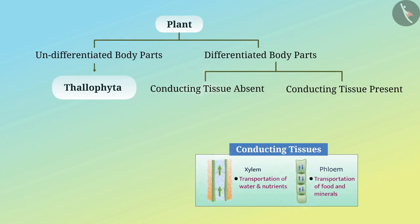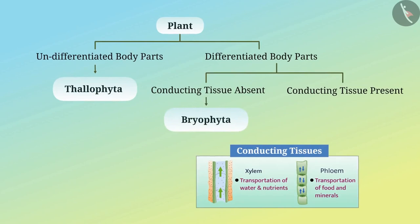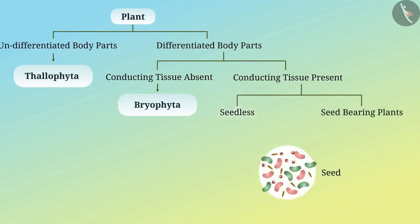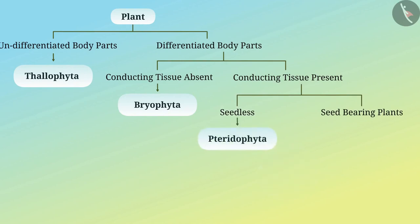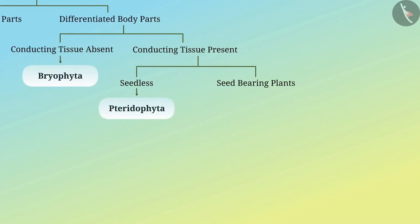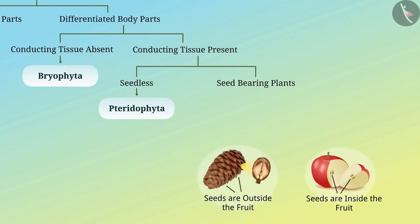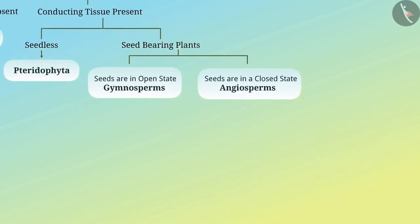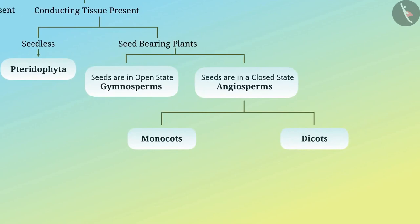Plants that do not have specific tissues for conduction in their body are placed in the subclass bryophyta. Plants that have tissues for conduction are classified based on their ability to hold seeds. Seedless plants are placed in the subclass pteridophyta. Seed-producing plants are then classified on the basis of whether the seed is inside or outside the fruit. Plants whose seeds grow outside the fruit, in an open state, are called gymnosperms, and those whose seeds grow inside the fruit, in a closed state, are called angiosperms. Angiosperms can be classified into monocots and dicots based on the number of cotyledons.